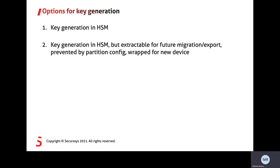Additionally, you have the option to make the key extractable with the key flag, so you have a future migration path open in case you plan to migrate to another system. The export can be prevented by the device config or the partition config. It is recommended that you perform the extract with a wrapper for the new device, so you move the key from one security boundary to another without having it exposed externally.